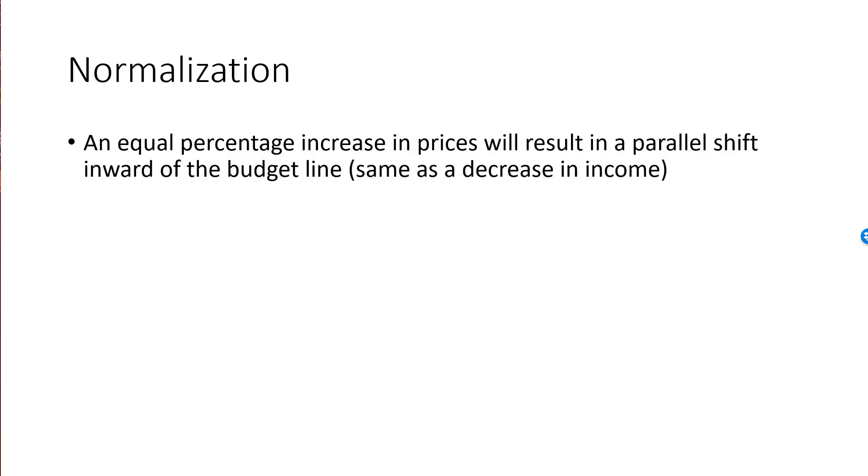So a quick review of this important discussion of normalization. If I make an equal percentage increase in both prices, then the budget line will shift inwards, and the new budget line will be parallel to the old one. The effect is identical to a decrease in income. Obviously, an equal percentage decrease in prices will result in a parallel shift outwards of the budget line, and this will be the same as an increase in income.